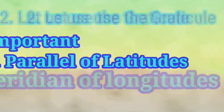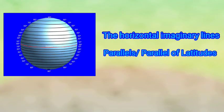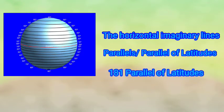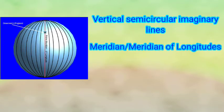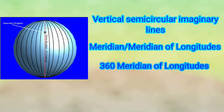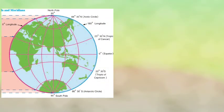We learned that the horizontal imaginary lines on the globe are called parallels of latitude. There are 181 parallels of latitude on the Earth, and we are going to introduce some of the important ones. We also learned that vertical semi-circular lines on the globe are called meridians of longitude. There are 360 meridians of longitude on the Earth, and we will also introduce some important meridians.